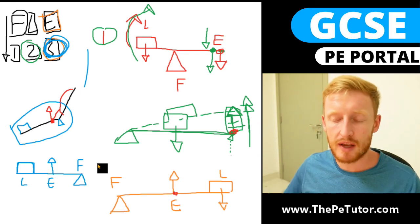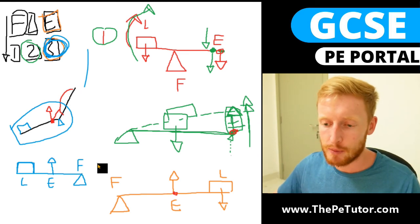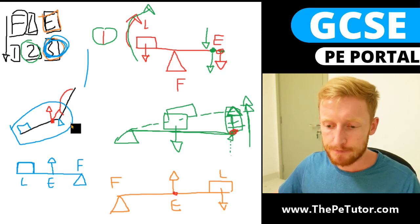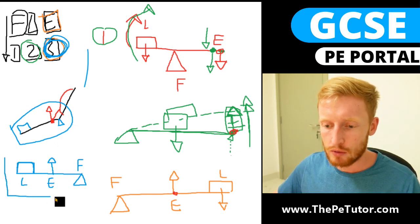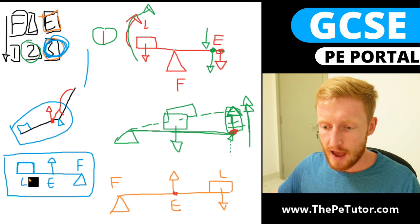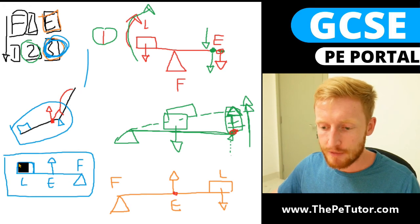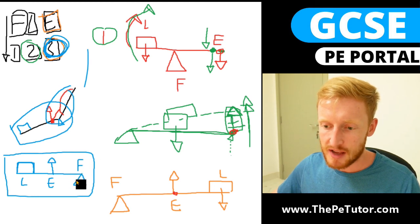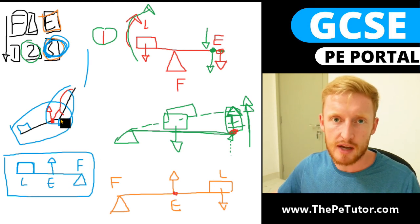And this is how we would draw it: L E F, load at one end, effort in the middle which is being caused by the bicep contracting, and the fulcrum at the end which is the elbow joint of the humerus, radius and ulna.